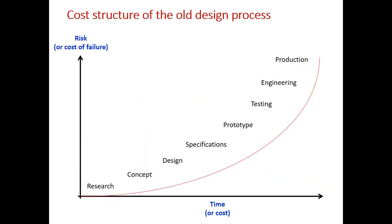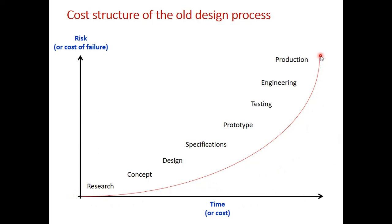In today's class we are covering how additive manufacturing is helpful. You can see this is the conventional design process — on the x-axis it is time and cost, on the y-axis it is the risk and the cost of failure. As time permits, the amount of time spent in research, concept, and design specification is more. Then we start with the prototype, test it, do the engineering production drawings and it goes to the market. So the time and cost is high, and the amount of risk and failure is more in this case also.